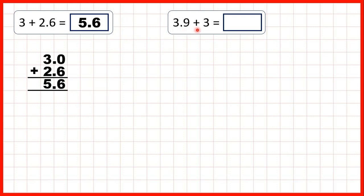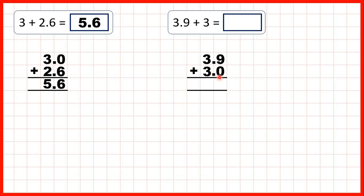Now we have 3.9 plus 3. We can write this out as a column addition, making sure the three ones are written underneath the ones of our decimal. When we have a whole number we can always write point zero on the end of it. So now we have our ones and tenths columns lined up and our decimal points lined up.